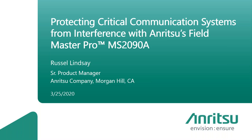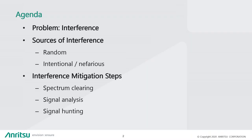Thank you Sandra, and thank you everybody for joining us today. I hope you're all hunkered down in your home offices and staying healthy. Today's topic is protecting critical communication systems from interference. We're going to discuss some of the sources of interference, why it's important to protect our critical communication systems, what different types of sources we have, and then talk about some mitigation steps. We'll also go into specifics on a tool — the MS-2090A Fieldmaster Pro from NRITSU — and how that can be used for mitigating interference in the field.